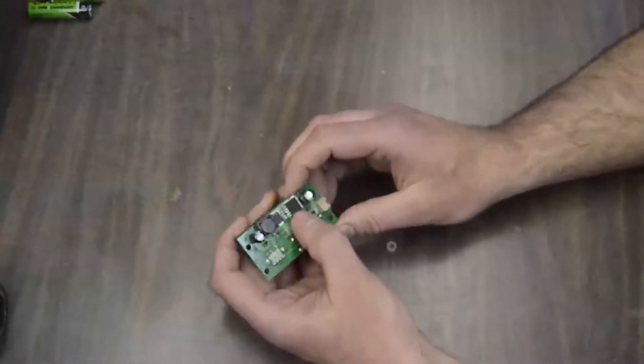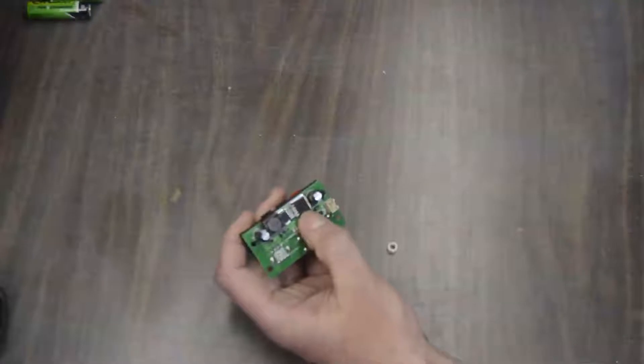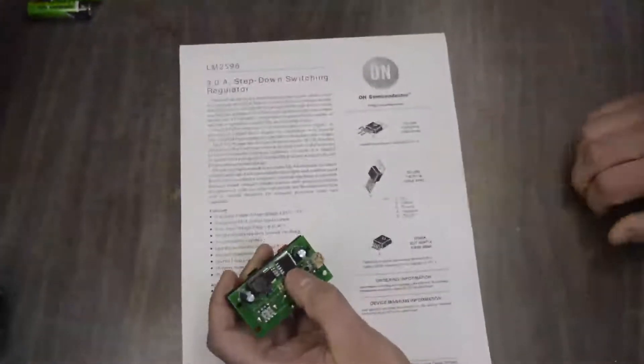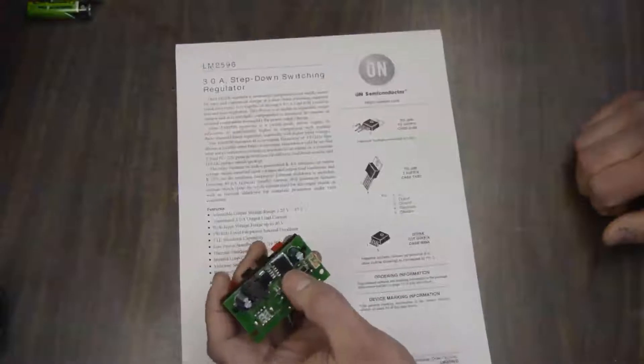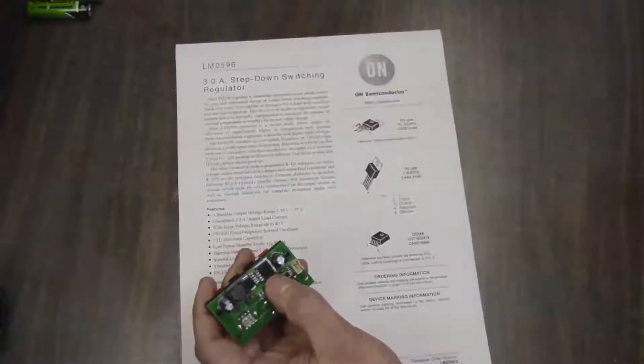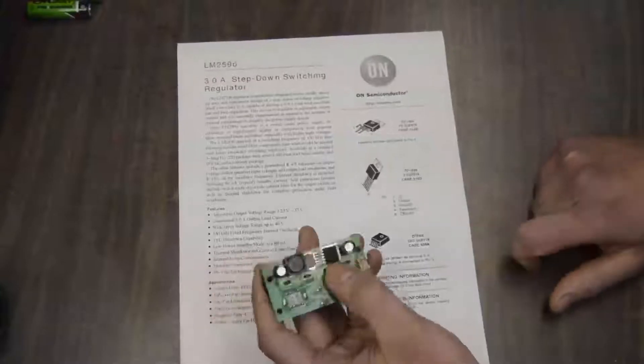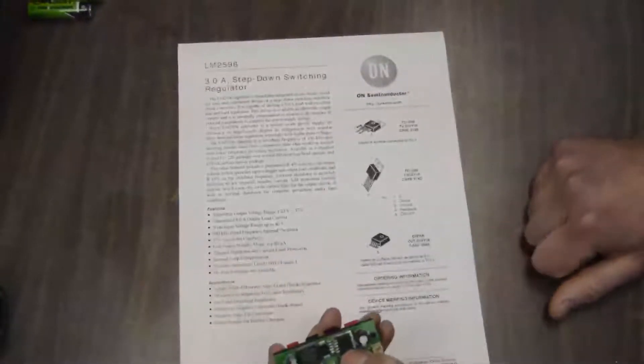I don't know what chip this is, because it's not marked. However, I'm going to assume for the sake of argument that it is the most common chip I can find in power supplies from China, which is an LM2596. It also happens to come in the package in question, so that sort of adds to the legitimacy of that claim.